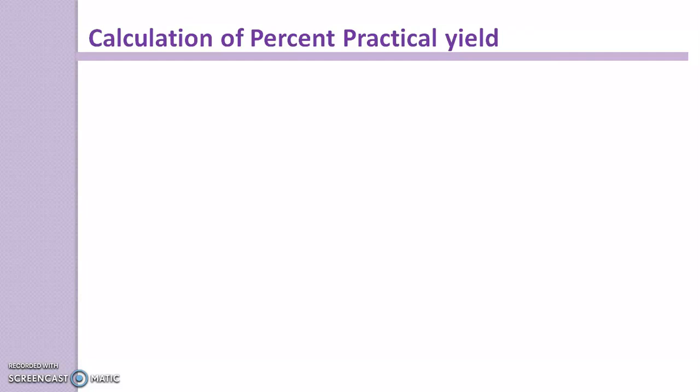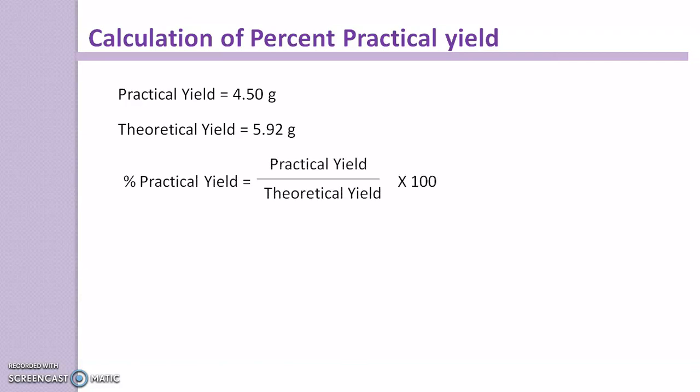Depending upon that, calculate the percent practical yield. So practical yield is 4.5 gram, theoretical yield is 5.92 gram, so percent practical yield is equal to